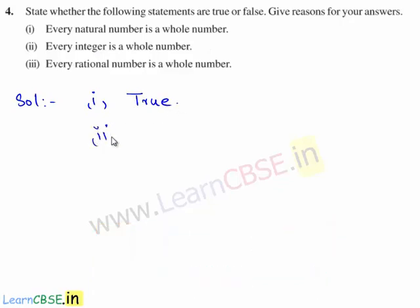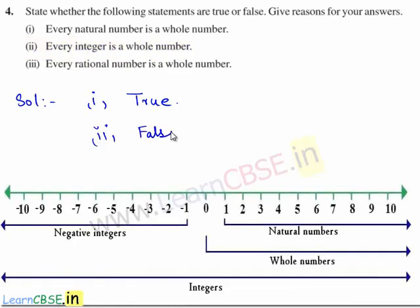Now let's consider the second statement: every integer is a whole number. The statement is false because integers can also contain negative numbers, but the set of whole numbers contains only positive numbers. Hence, every integer cannot be a whole number.